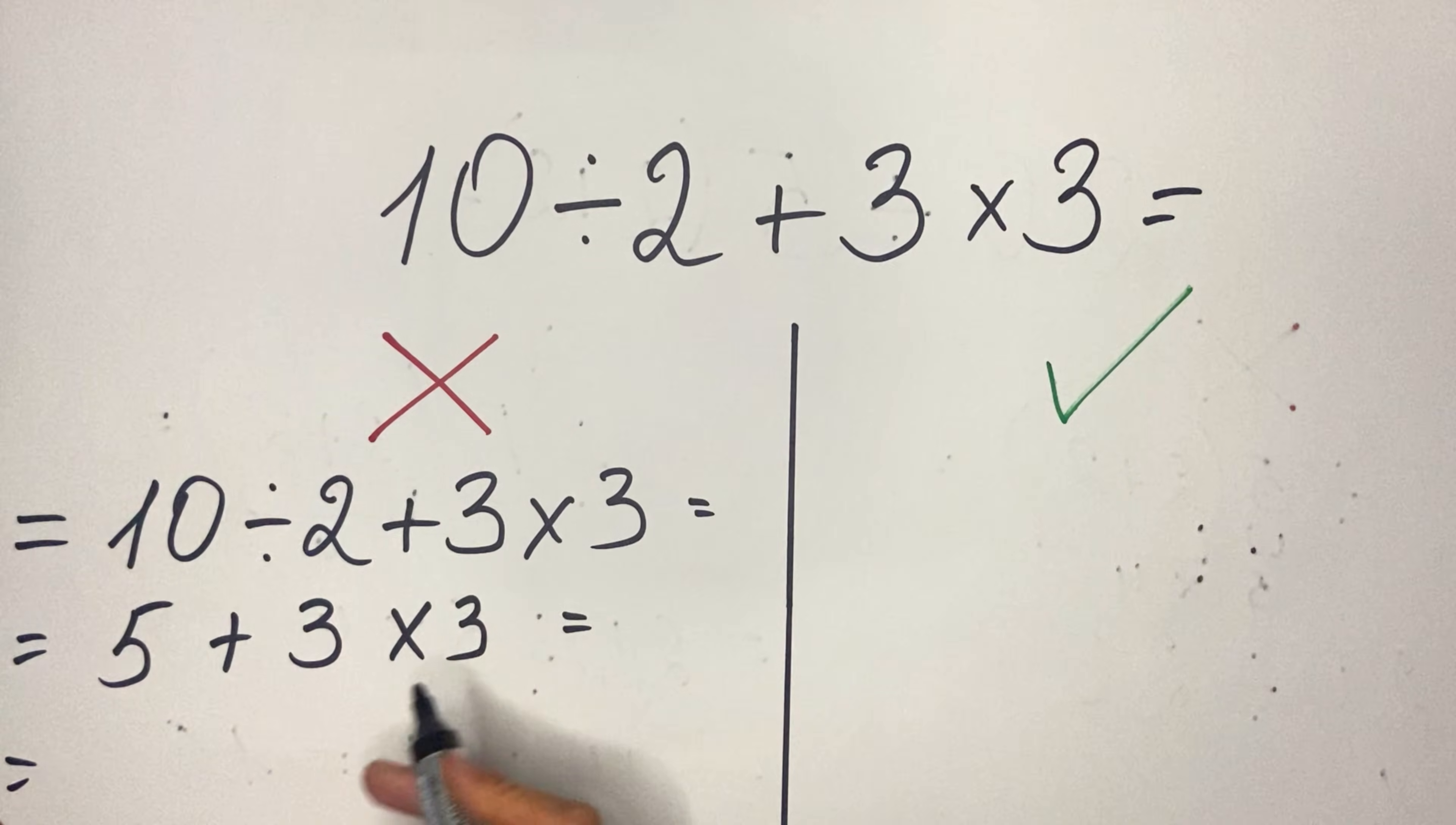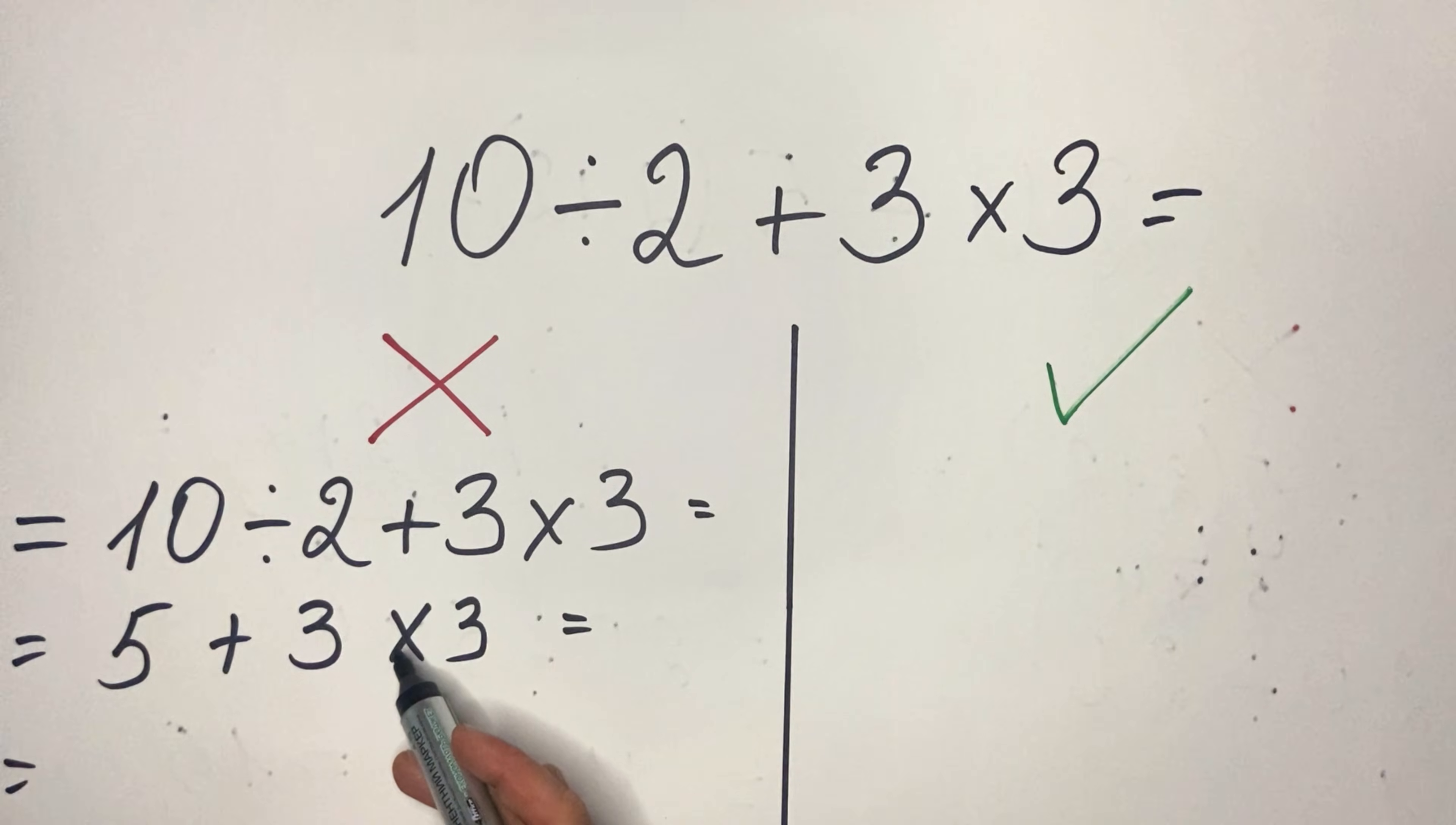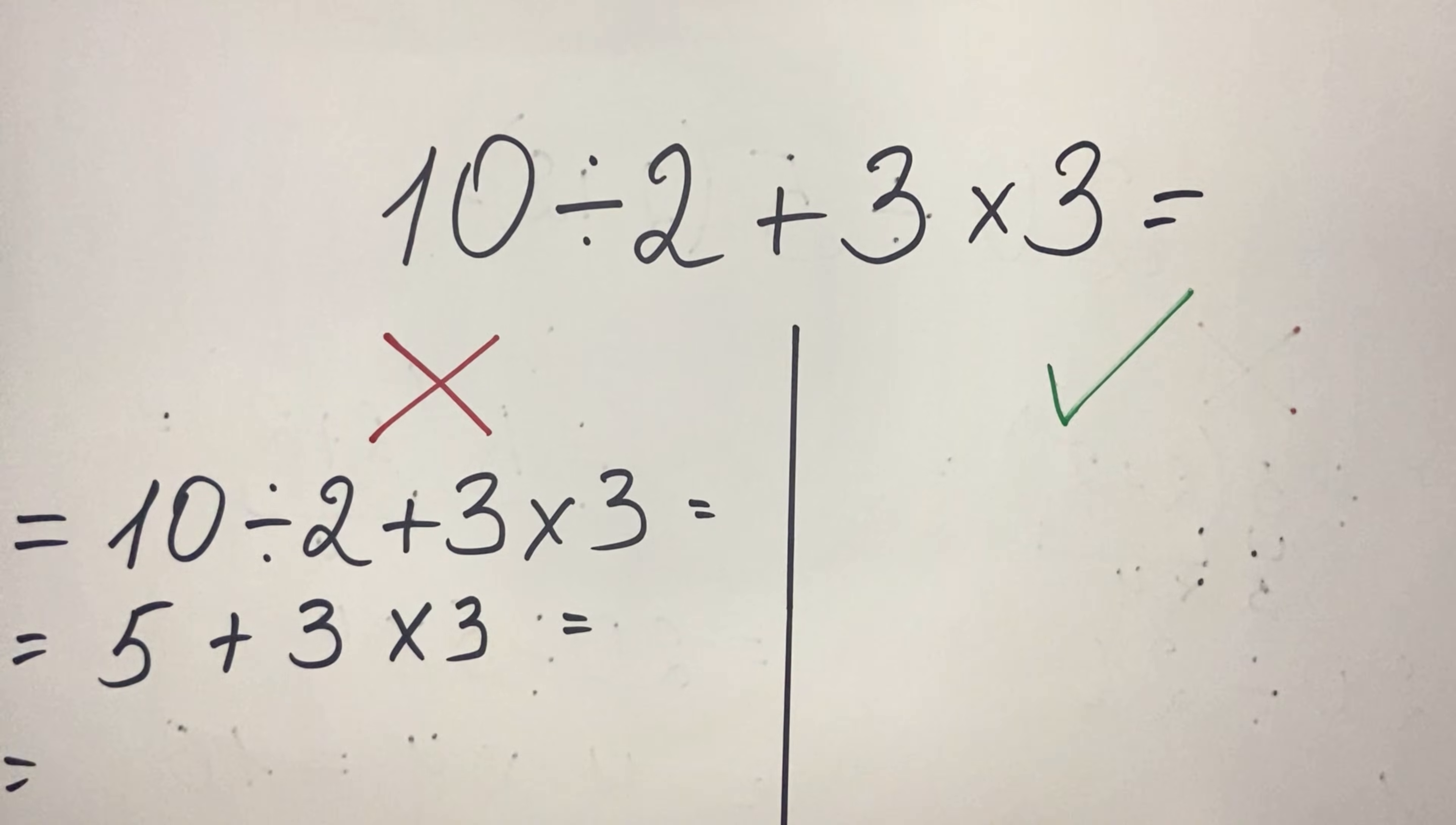Then they don't pay attention that there is a multiplication here. So they do 5 plus 3 equals 8, so they get 8 multiplied by 3, which is 24.